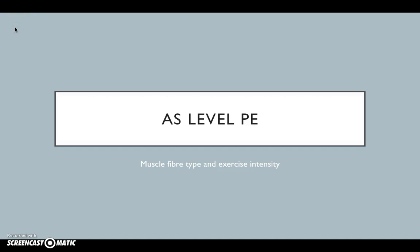Hi guys, welcome to this week's screencast which is on muscle fibre type and exercise intensity. Over the past two lessons we looked at antagonistic muscle pairs — agonist, antagonist, synergist, fixator — as well as types of muscular contractions such as concentric, eccentric, and isometric.